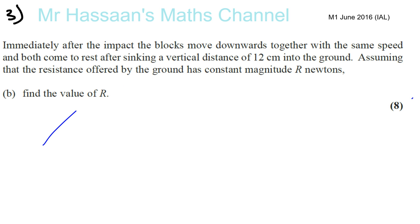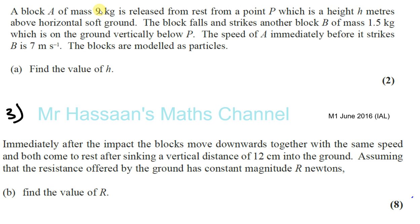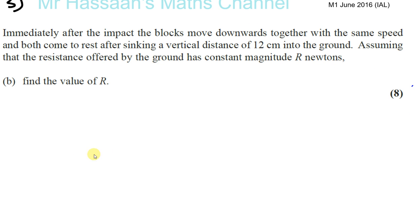Okay, so now immediately after the impact the blocks moved downwards together with the same speed. So basically in 3A what we did was we had two blocks. We had block A and B. Block A fell down onto block B on the soft ground. Here's the soft ground, so block A fell down onto block B. And immediately before the impact, before it hit B, its speed was 7 meters per second.